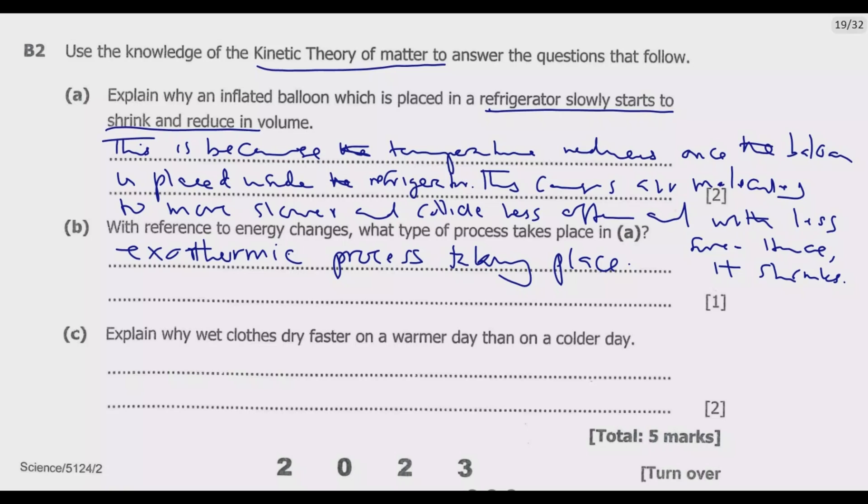Question C: Explain why wet clothes dry faster on a warmer day than on a colder day. So why is it that clothes dry fast on a warmer day than on a colder day? So evaporation is the main reason behind.